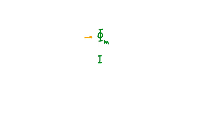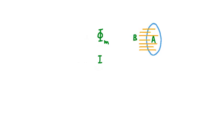It involves magnetic flux, symbolized phi sub m, and it involves current, symbolized capital I. We know that current is charge that flows through a closed circuit. If we have some area, capital A, and there's a magnetic field B passing uniformly through that area, then the magnetic flux through this loop of area A is equal to B times A. This shows us that magnetic flux is a magnetic field spread over some area.